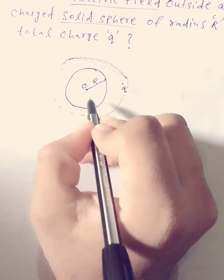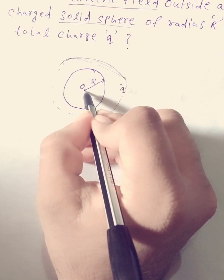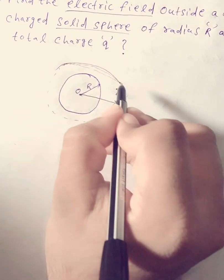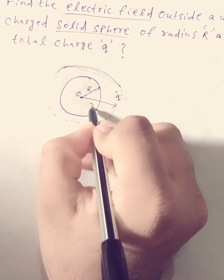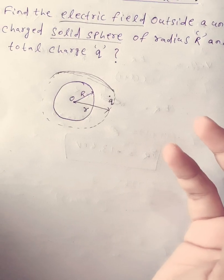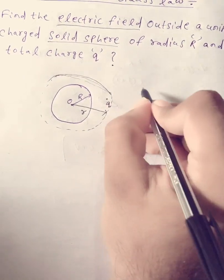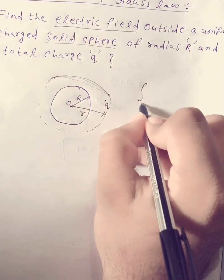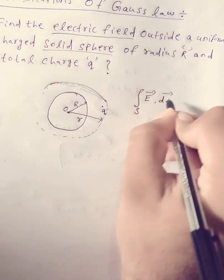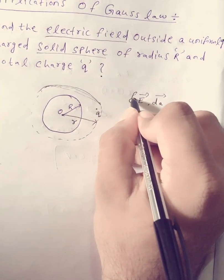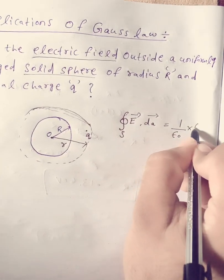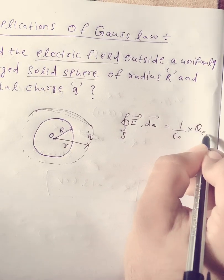This is my imaginary sphere of small radius r. The mathematical representation of Gauss's Law is: the surface integral of the electric field over a closed surface is equal to 1 by epsilon-0 times the total enclosed charge Q.